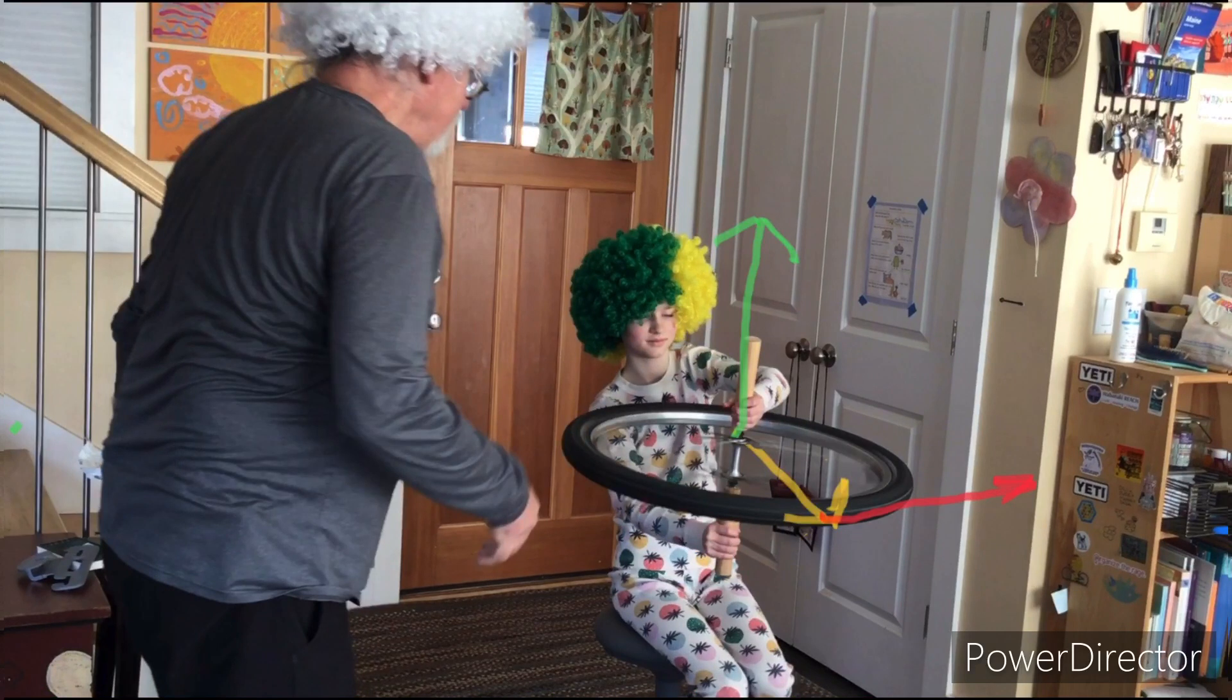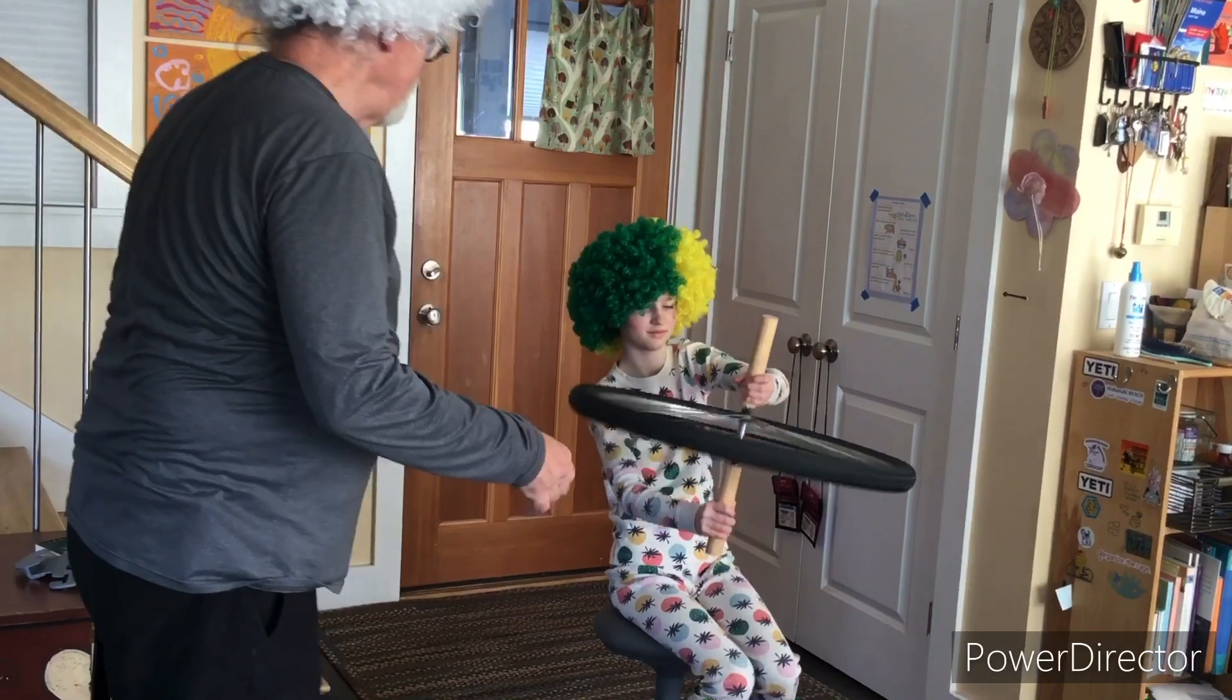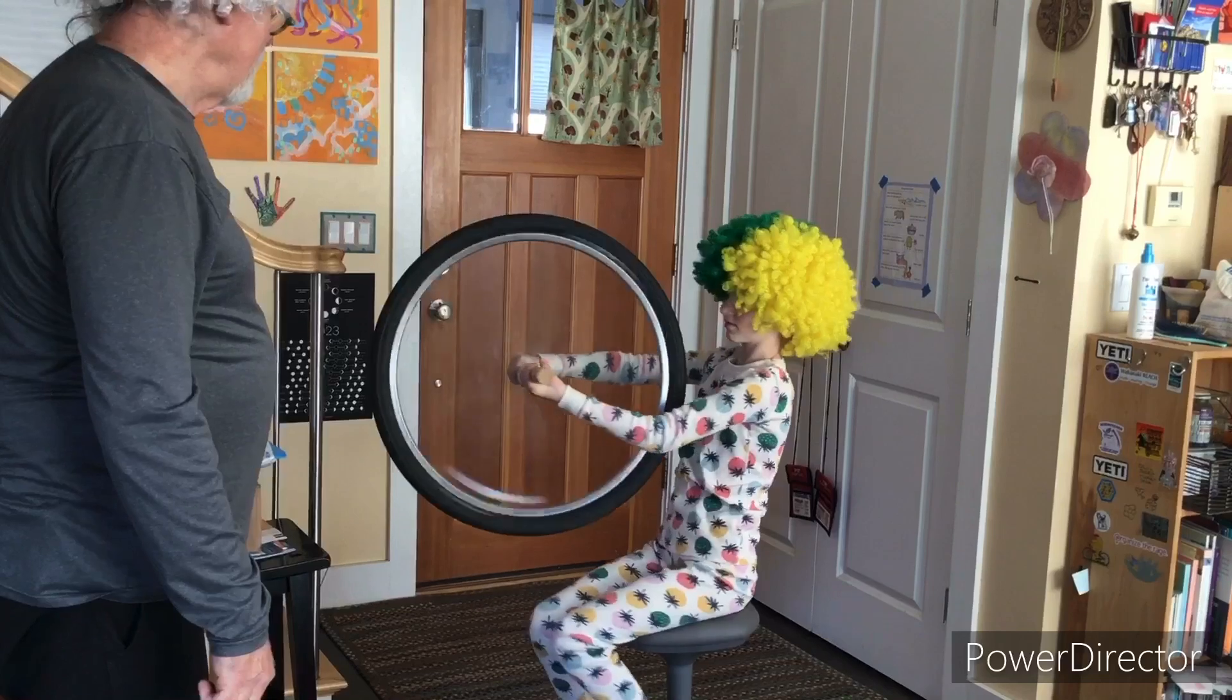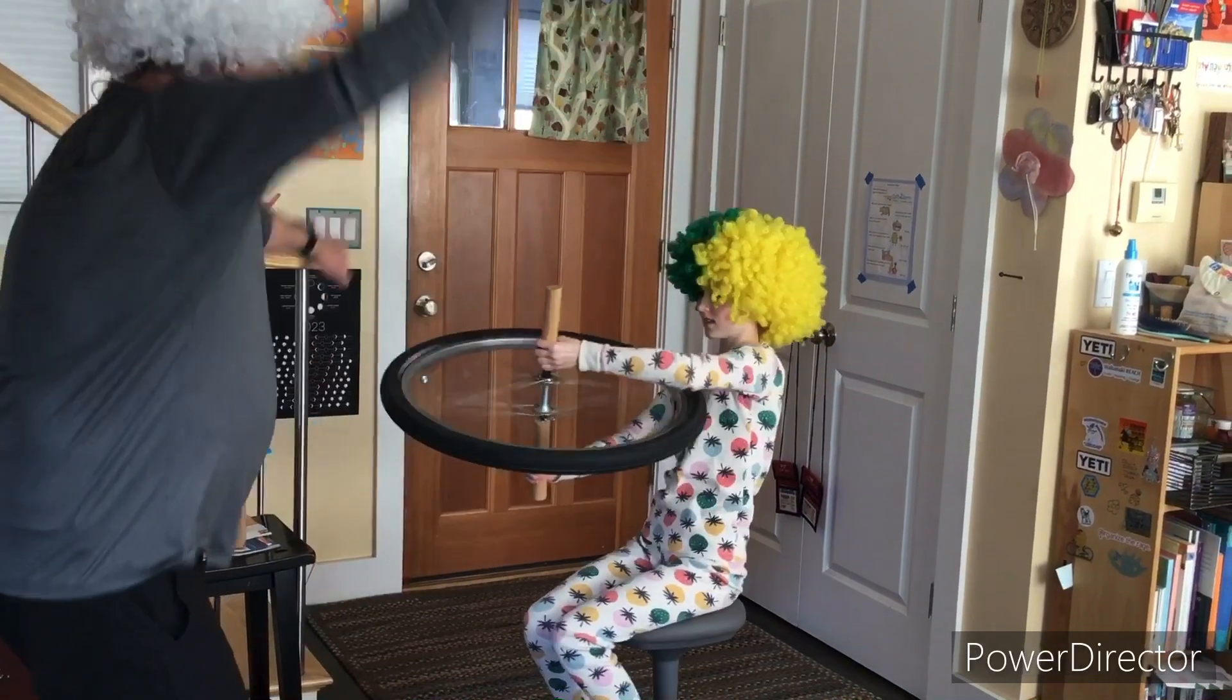The yellow arrow is the radius or displacement vector. The red arrow is the linear momentum of the wheel and the green arrow is the resultant vector, the angular momentum. Flip it. Come all the way around, put it up straight and now flip it the other way.